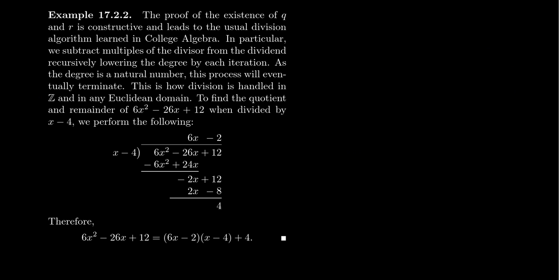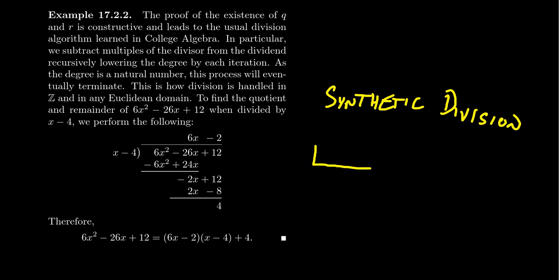Before switching slides, I want to remind the viewer about synthetic division. Synthetic division is a trick commonly used in College Algebra (Math 1050) to help us factor larger degree polynomials. The way it works: take your dividend and write down all of its coefficients in descending order. For our polynomial, that's 6, −26, 12. If any terms are missing, put in a zero as a placeholder — so having the x² spot, x spot, and constant spot is important.